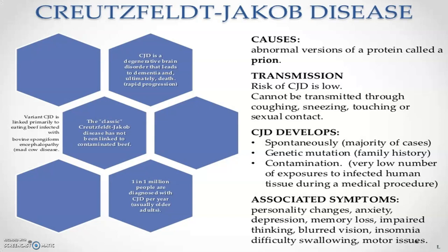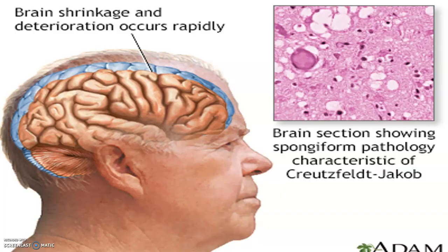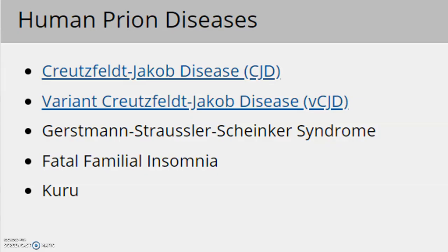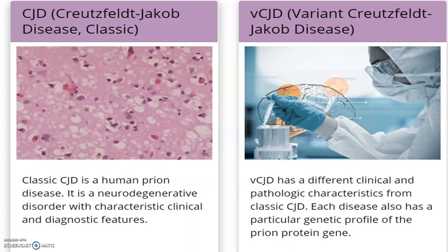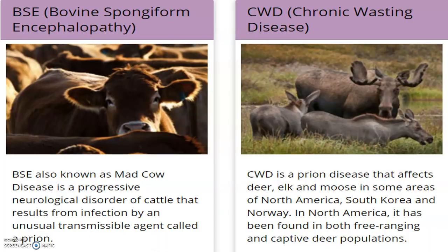CJD risk is low; symptoms include personality changes, thinking problems, poor judgment, insomnia, memory disorders, and depression. Brain shrinkage and deterioration occur rapidly, with brain sections showing spongiform changes. Human prion diseases include CJD, variant CJD, kuru, and fatal familial insomnia. Animal prion diseases include BSE, CWD, scrapie, transmissible mink encephalopathy, and feline spongiform encephalopathy.